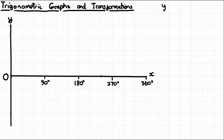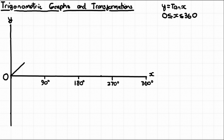Now let's do the tan graph: y = tan(x), from 0 to 360 degrees. The tan graph looks very different to sin and cos — you just have to remember its shape. From 0 it starts at 0 and goes continuously upward, curving steeply. There's an imaginary line at x = 90 degrees that the graph never touches and never crosses — this is an asymptote.